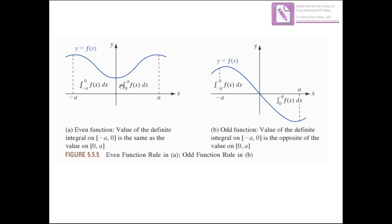For the even function, from minus a to 0 is the integral of this function, and from 0 to a is also the integral of f(x). We see that the right integral, which is from 0 to a, is the same as the integral from minus a to 0. So if you want to evaluate the integral from minus a to a, it will be equal to 2 multiplied by the integral from 0 to a.